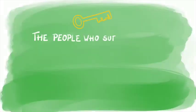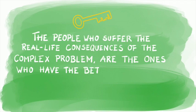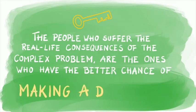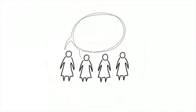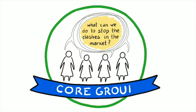One of the first key lessons from this story is that the people who have more to lose or to win, that suffer the real-life consequences of the complex problem, are the ones who have the better chance of making a difference in this particular issue. And this was the case of the several women who sat down one day and started talking among each other about what they could do to stop the clashes in the market. Let's call these four women the core group.